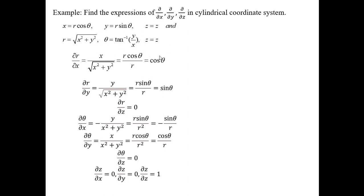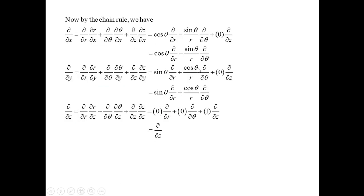Using these transformation equations, we will convert the differential operators into cylindrical polar coordinates using the chain rule: ∂/∂x = (∂/∂r)(∂r/∂x) + (∂/∂θ)(∂θ/∂x) + (∂/∂z)(∂z/∂x).